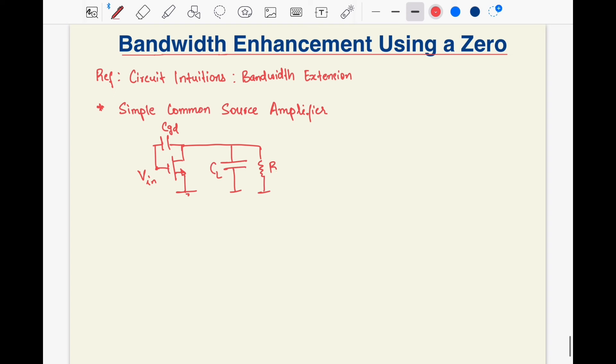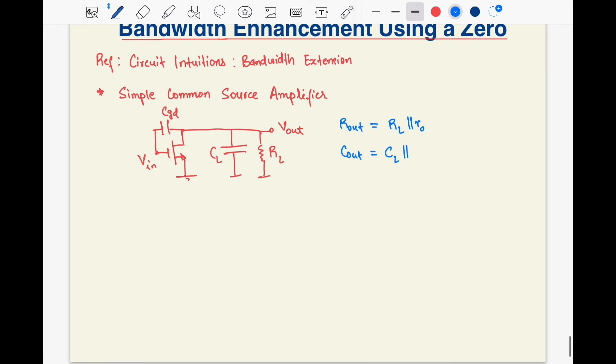We'll next look at the short circuit output current to draw the Norton's equivalent. In the shown polarity, the short circuit output current is simply minus gm times vn plus vn times cgd.